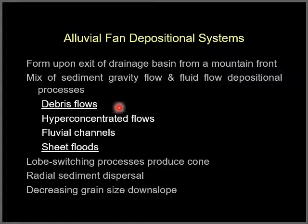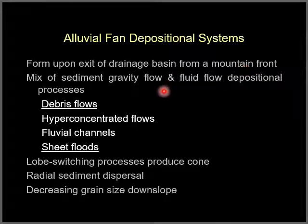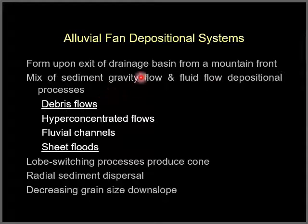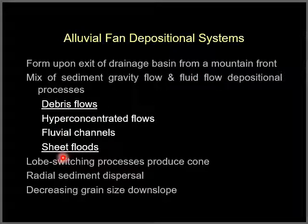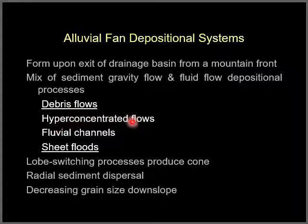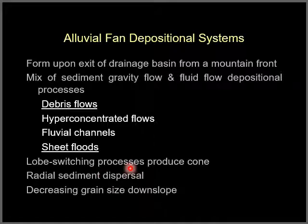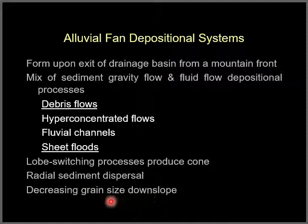Alluvial fan depositional systems are normally formed at the exit of drainage basins from the mountain front. There are two main processes involved: gravity flows and fluid flows. Gravity produces debris flows, while fluid flows are normally related to sheet floods. The specific processes occurring in alluvial fan deposition include debris flows, hyper-concentrated flows, formation of alluvial channels, and sheet floods. Lobe switching is also common to produce the cone-shaped morphology, with radial sediment dispersal and decreasing grain size downslope of the fan.